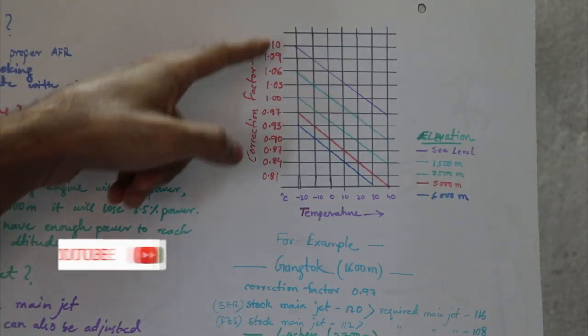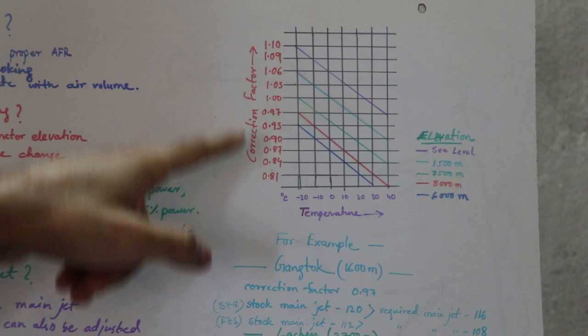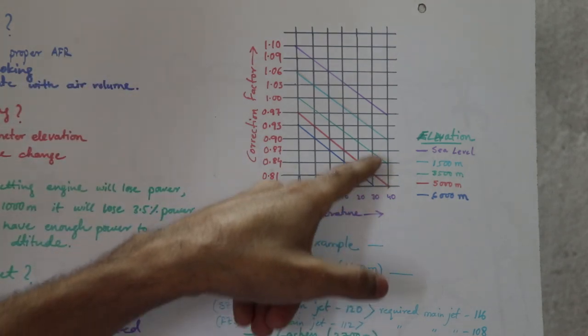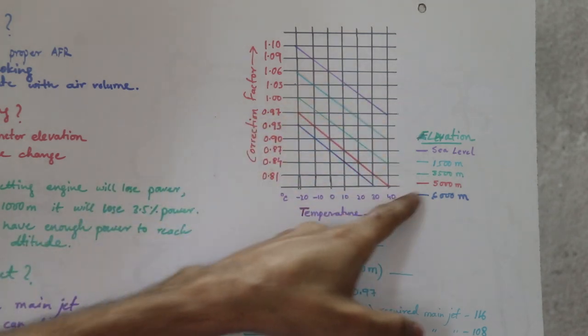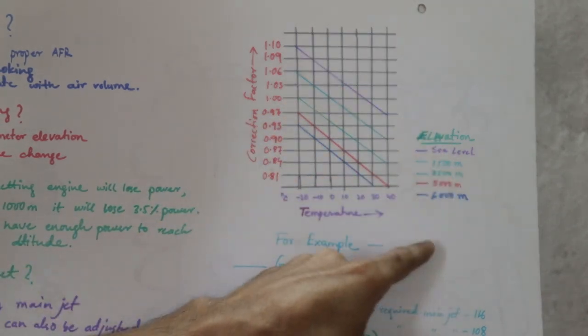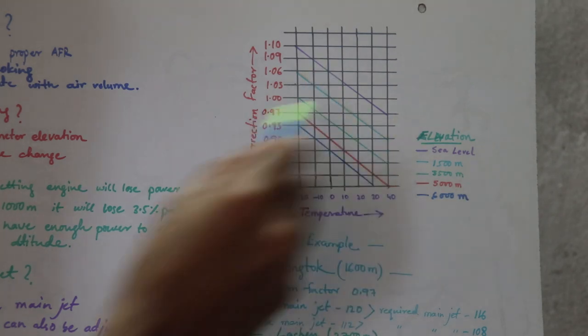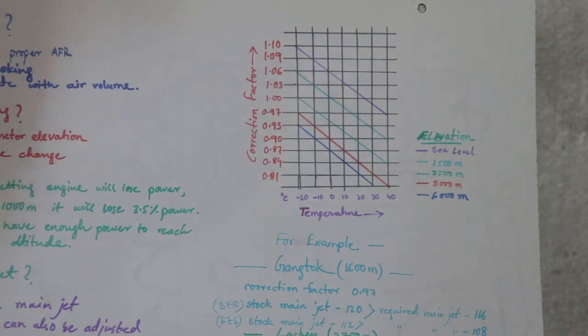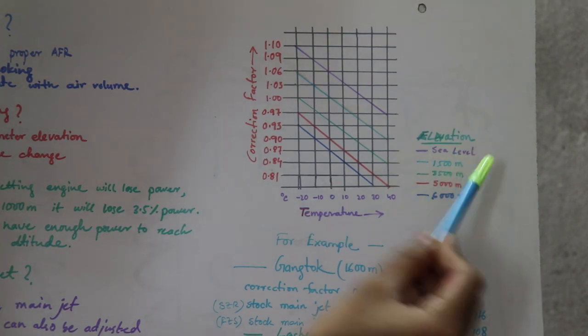Sometimes it works very well and you may not need to rejet at all. Only changing the filter it will be fine to go. So you can always carry a pod filter with you. Here is the graph. You can see I have plotted temperature with a correction factor.